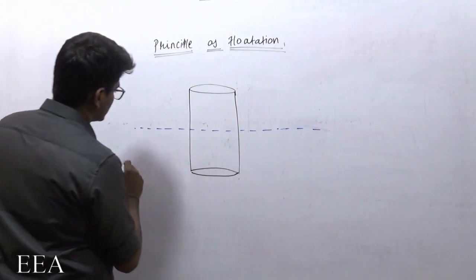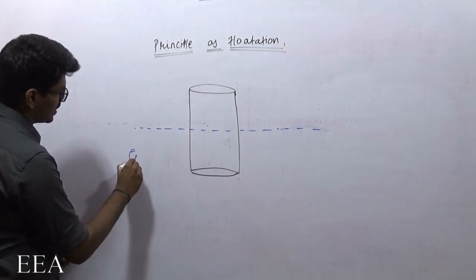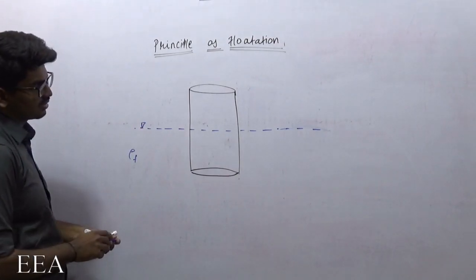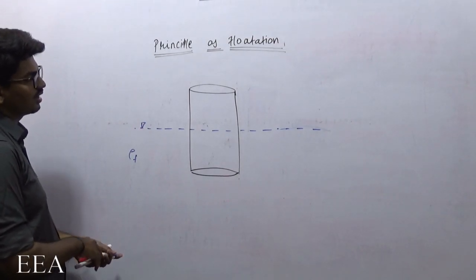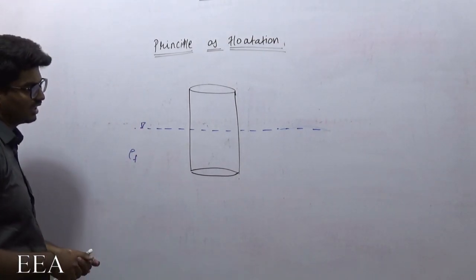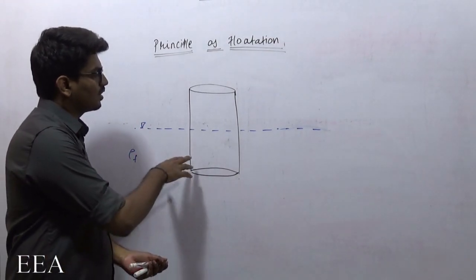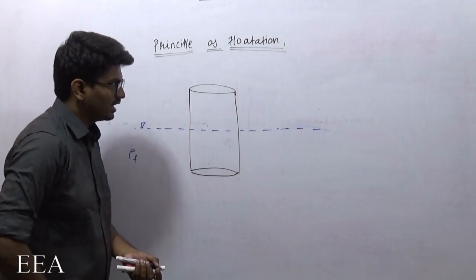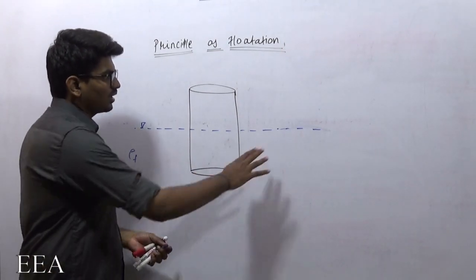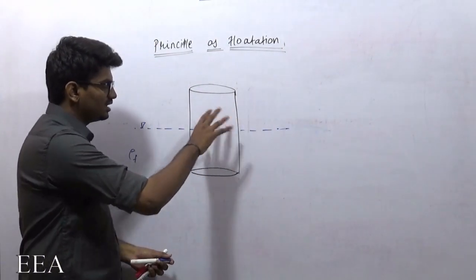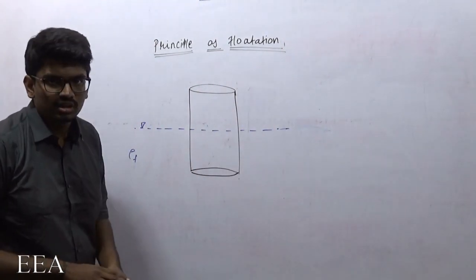Let me take the liquid's density as rho_f. This is the free surface. So I want this solid body to float in the liquid. If the solid body has to float in the liquid, what are all the conditions for the solid body to float?